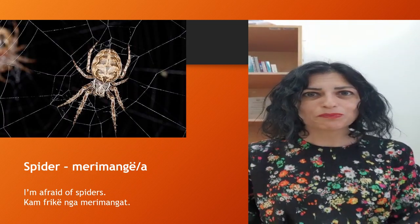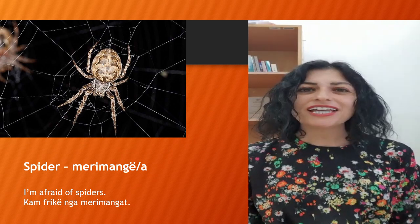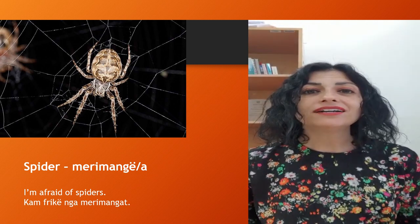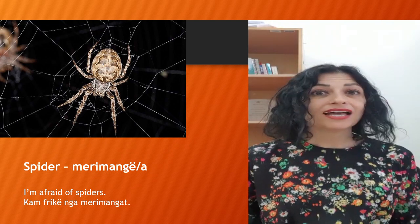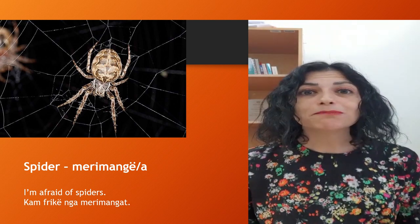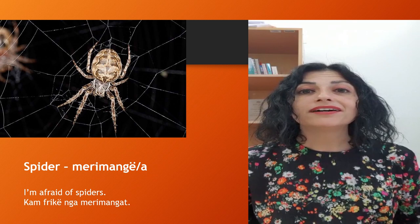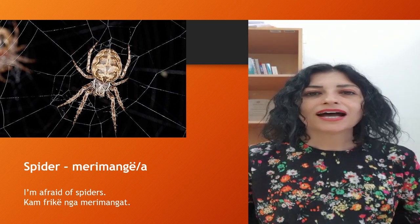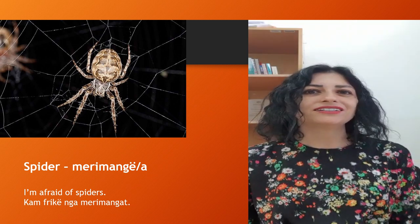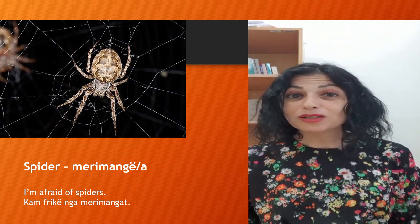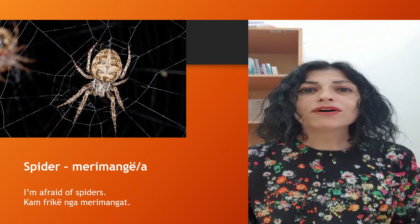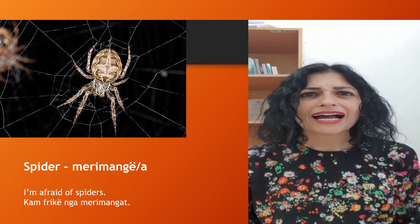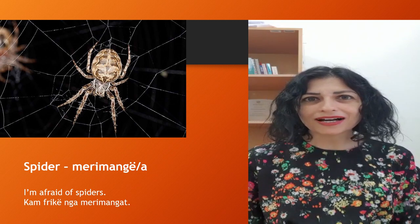The next one is the spider. In Albanian we say merimang — definite form merimanga. An example: 'I'm afraid of spiders.' In Albanian: kam frikë nga merimangat. Kam frikë nga merimangat.